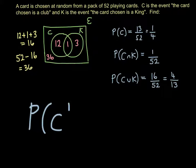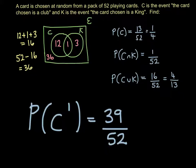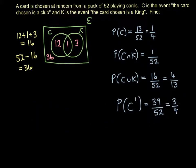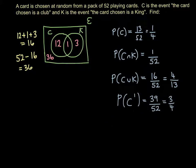But what if you've got one like the probability of the complement of C? So that's everything that's outside of C. That's going to be the 3 and the 36. So if we add those two together, that'll be 39 over 52. And if we cancel that down, you'll get 3 over 4. And again, if you think in terms of a pack of playing cards, the complement of C will be picking a heart, diamond, or a spade. So there's 3 suits there over 4.